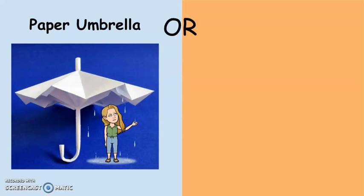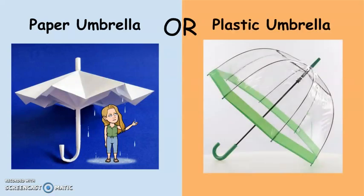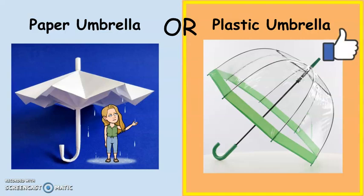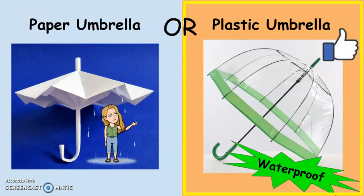Which is better when it's raining? An absorbent paper umbrella or a waterproof plastic umbrella. Obviously, the plastic umbrella because it is waterproof.